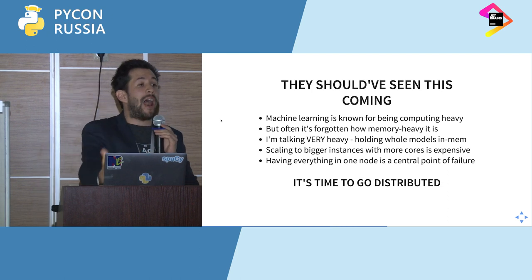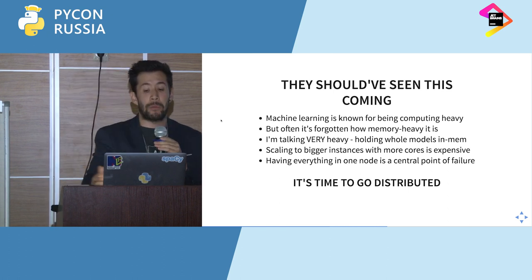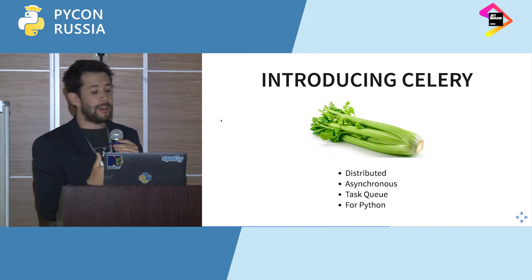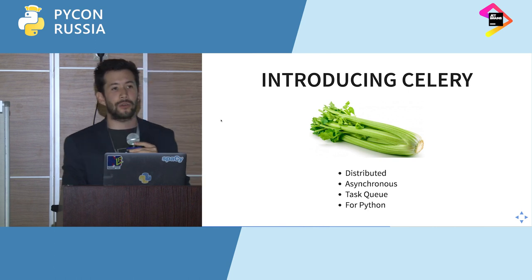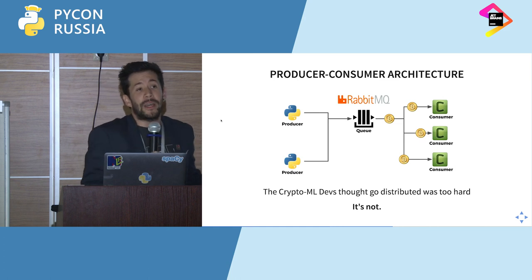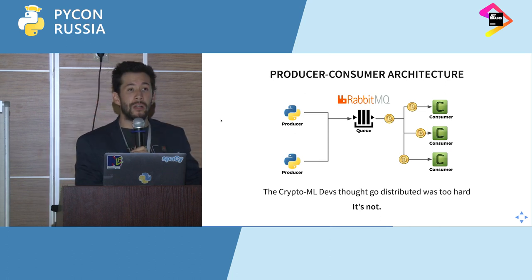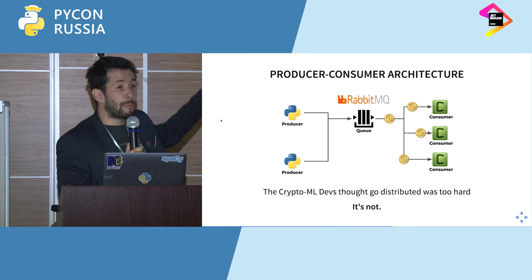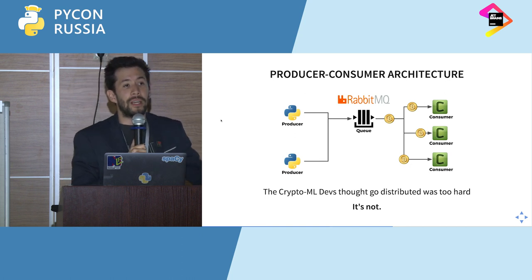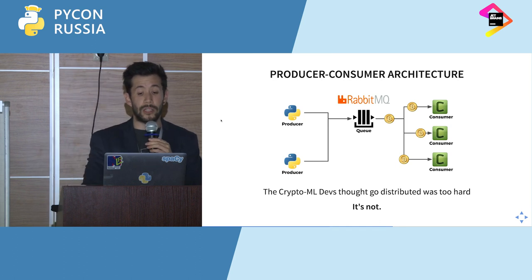Scaling to bigger instances with more RAM is very expensive. It's actually better to have everything distributed if possible. Here we introduce a solution for this in Python: Celery — a very nice distributed asynchronous task queue for Python. The explanation is basically a simple producer-consumer architecture. You have a queue in the middle — specifically RabbitMQ — with several producers submitting jobs and several workers picking them up and executing them. This could be something as simple as our deep predict function, or something more complex.